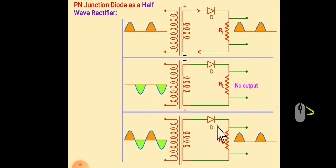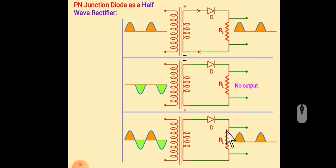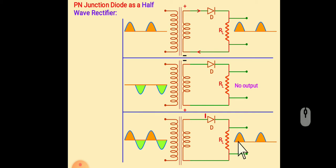And for these two half cycles, we get the output. As you can see, we get only the positive half cycle.